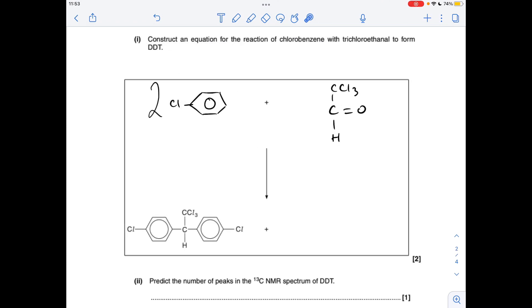The equation for the creation of this DDT molecule, obviously we're going to need two chlorobenzenes, and we're told it reacts with trichloroethanol. I've drawn it like that, so it kind of matches this structure we've got in the DDT. So what's the other product? Well obviously we need to lose a hydrogen here and here.